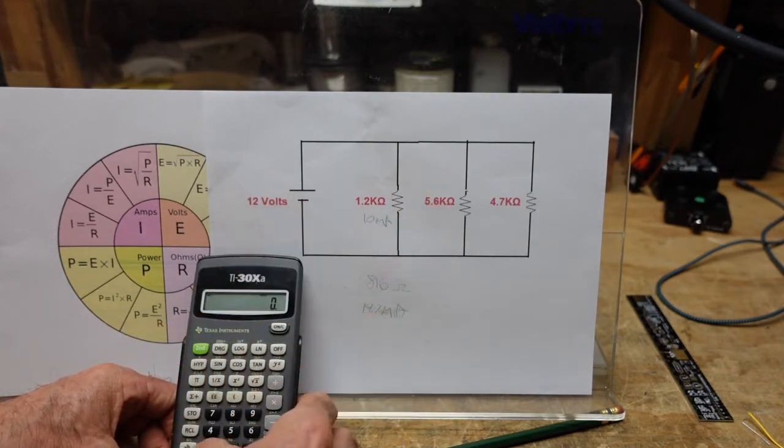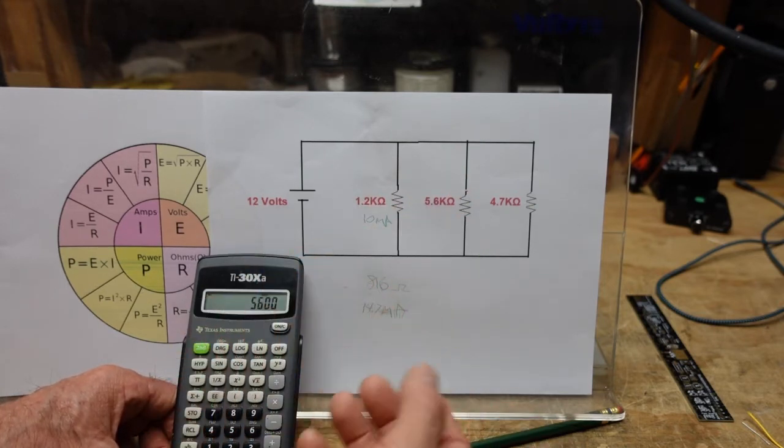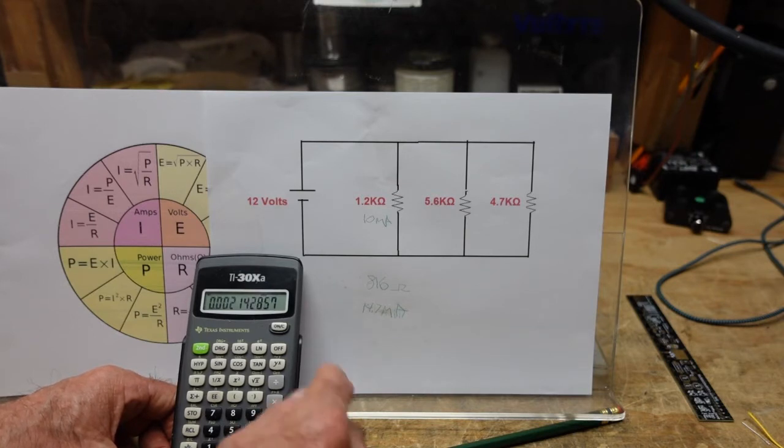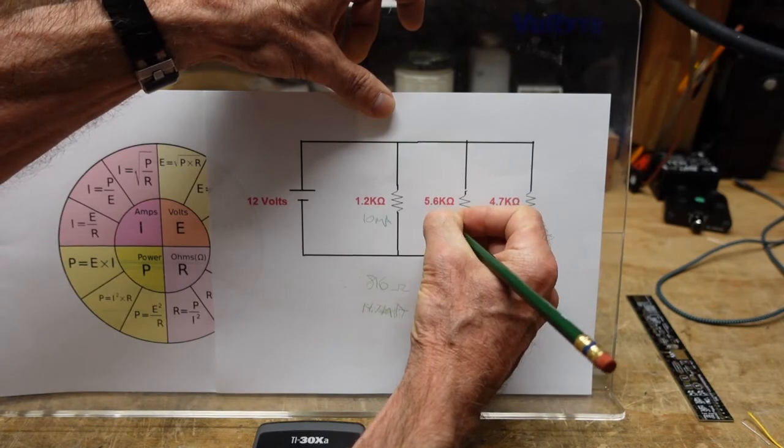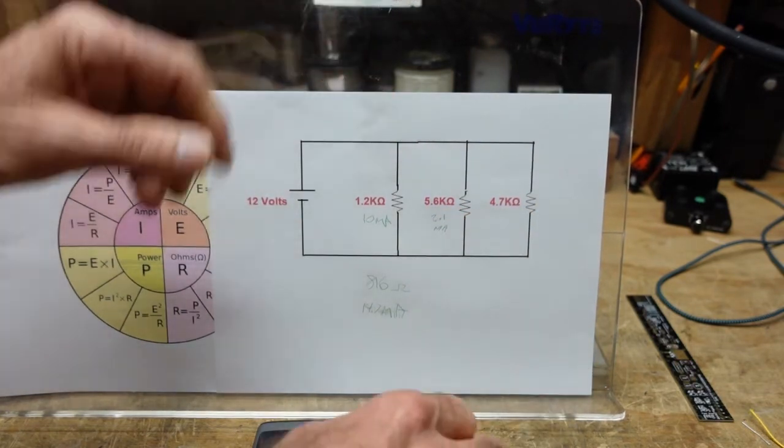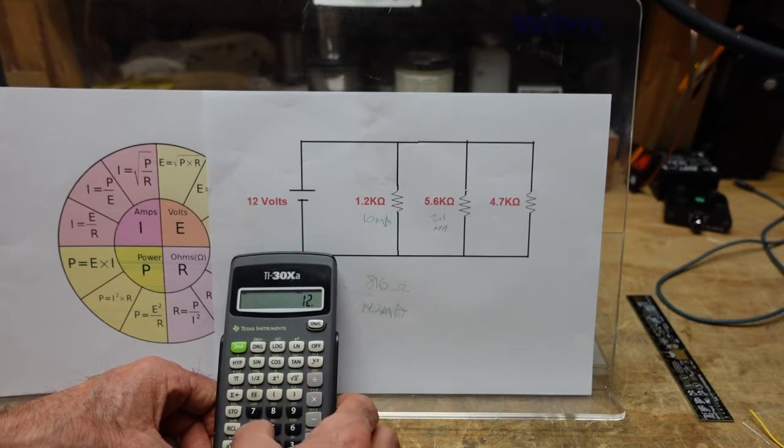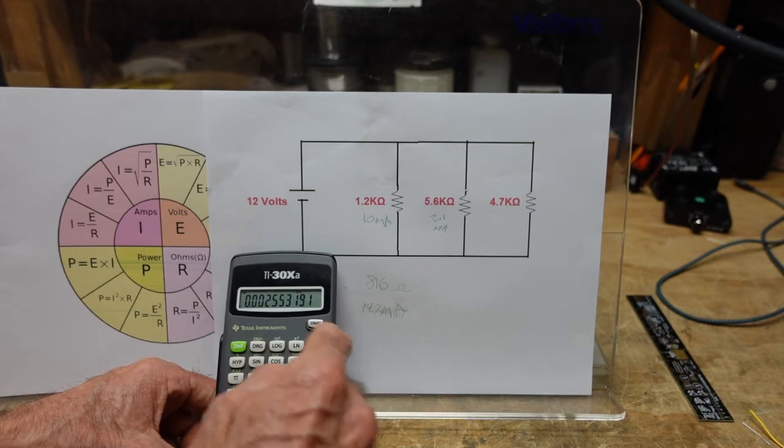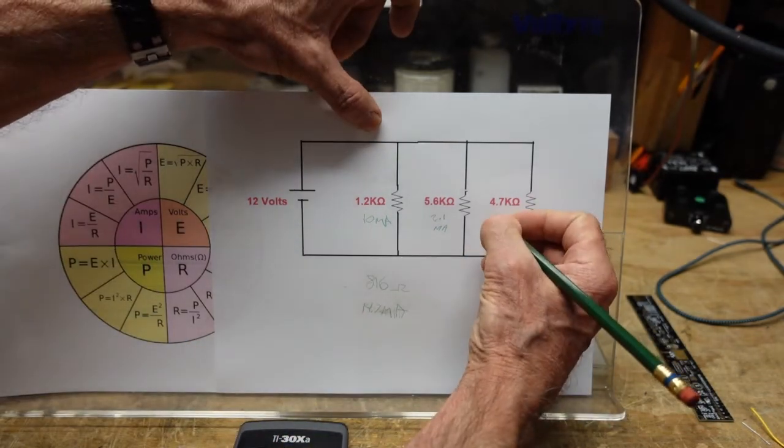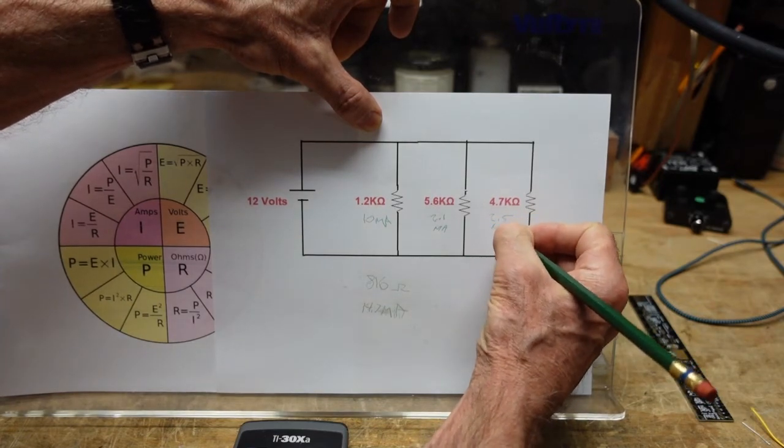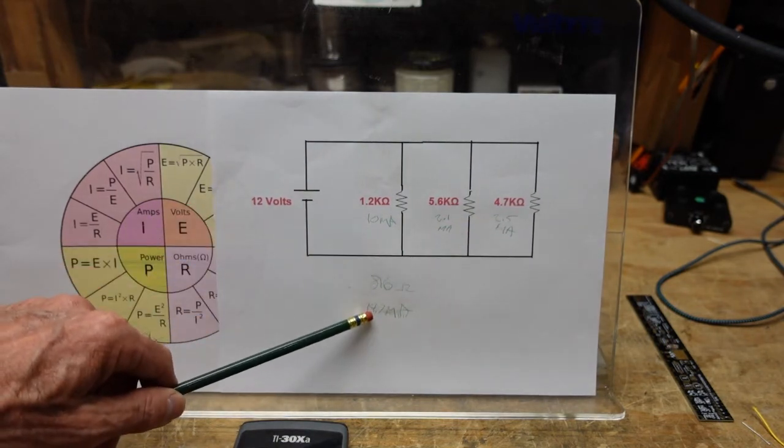The next one is going to be 12 volts divided by 5600 ohms, and that tells us we have 2.1 milliamps. So this is 2.1 milliamps. The last one is 12 divided by 4700 and that yields us 2.5 milliamps. We'll just call that 2.5 milliamps.